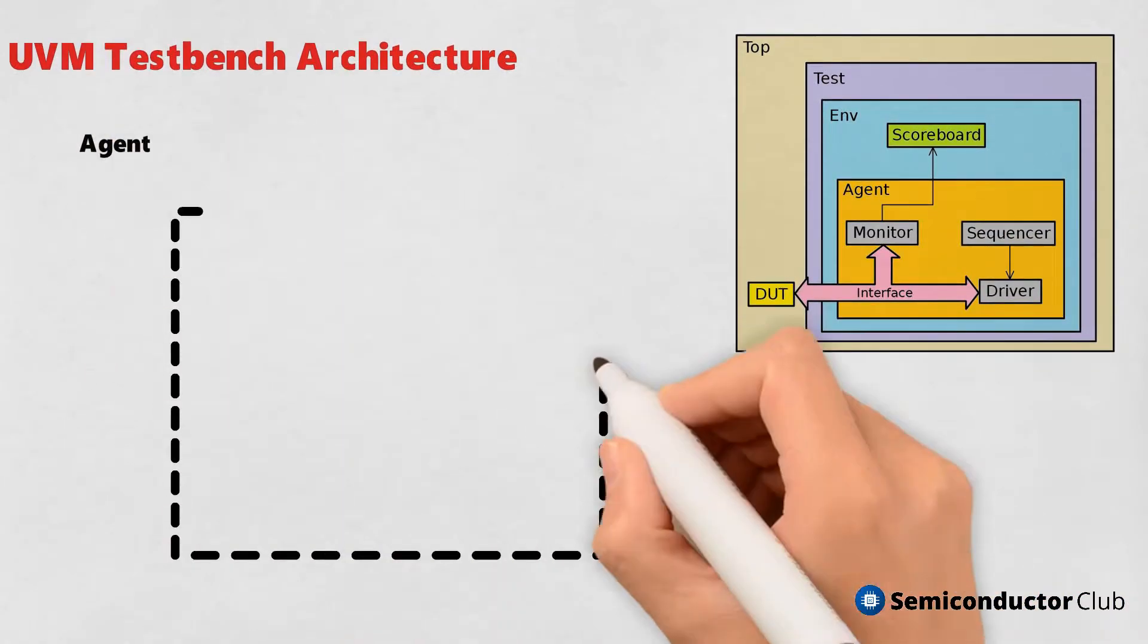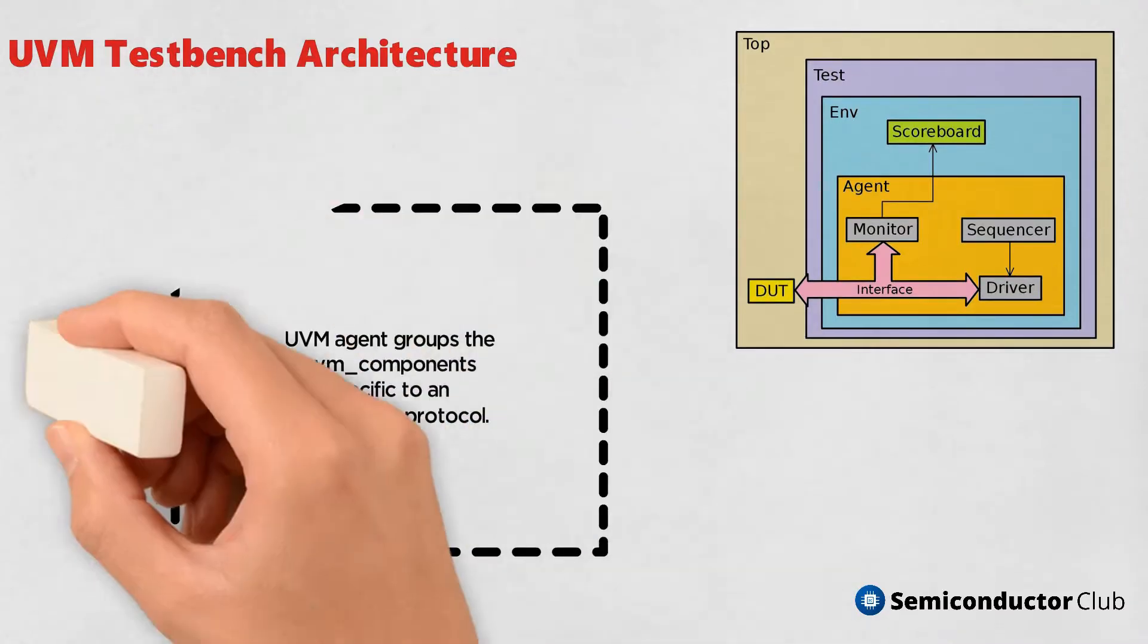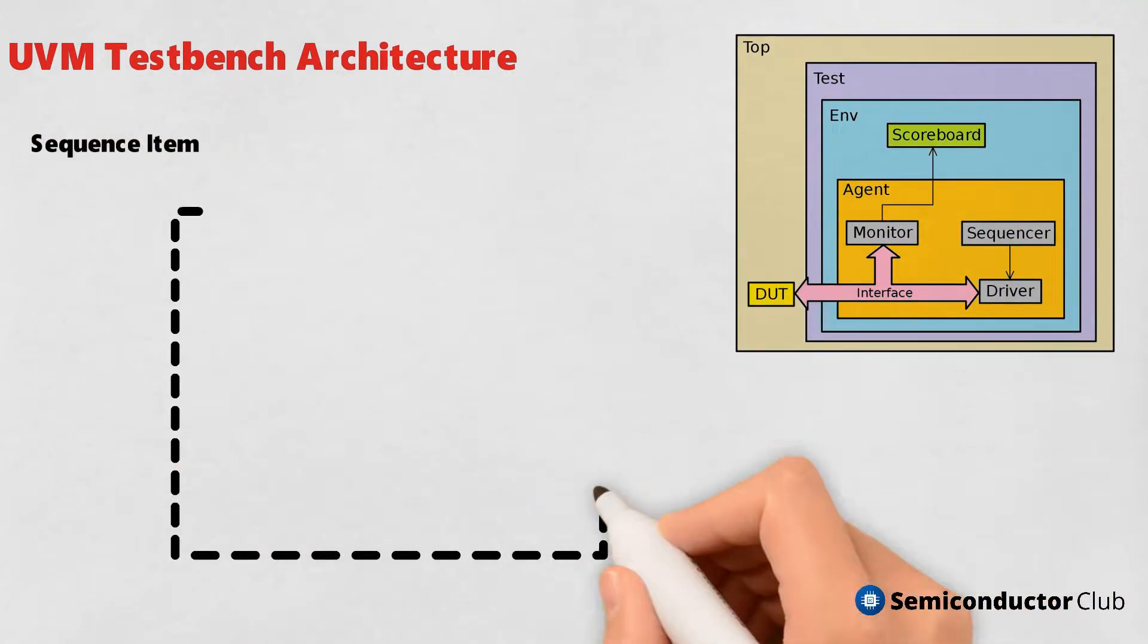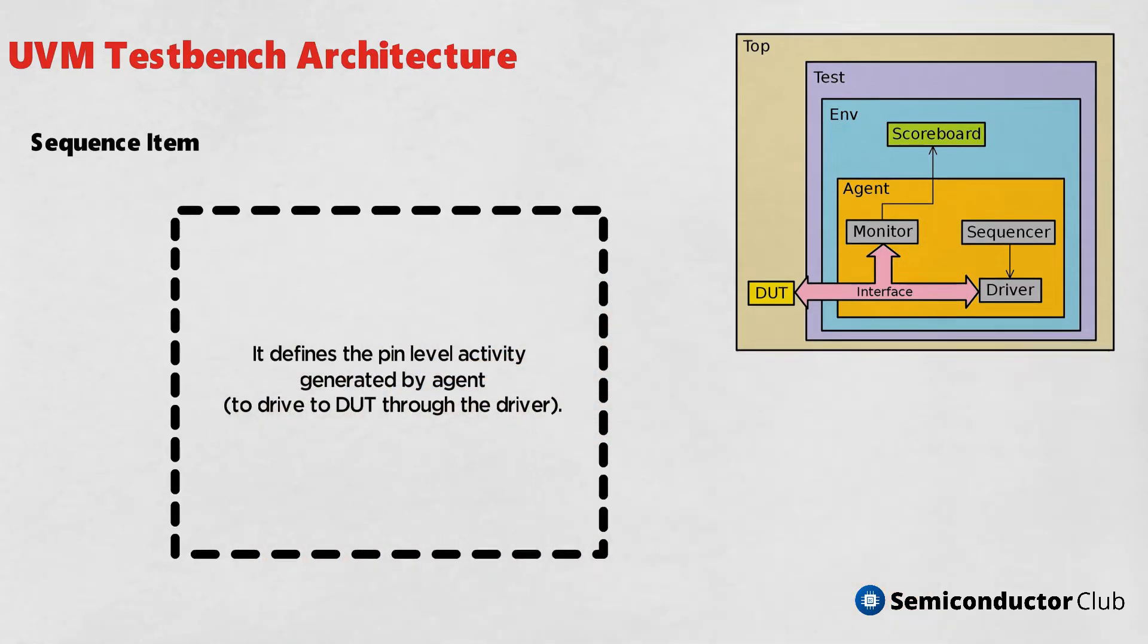Agent: UVM agent groups the UVM component specific to an interface or protocol. Sequence item: it defines the pin level activity generated by agent to drive to DUT through the driver.